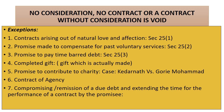Point number four: completed gift — that is, a gift which is actually made. This is valid when it is in writing and registered. Point number five: promise to contribute to charity. In this case, if a person promises to contribute for something, and based on which the other party has taken some monetary liability, that is a valid contract.